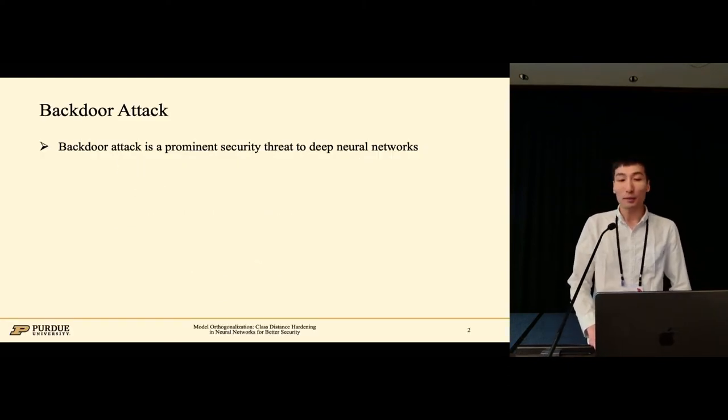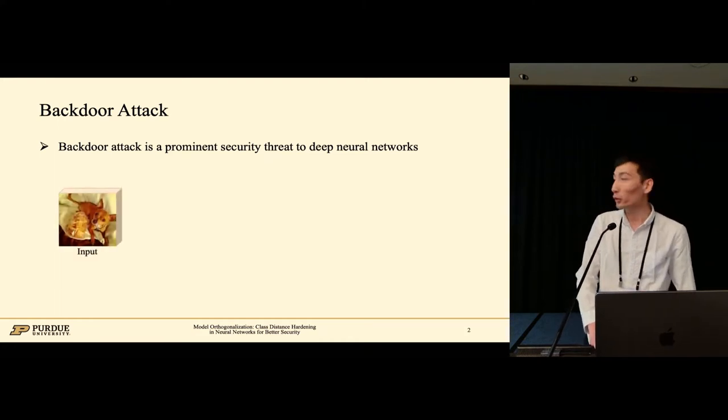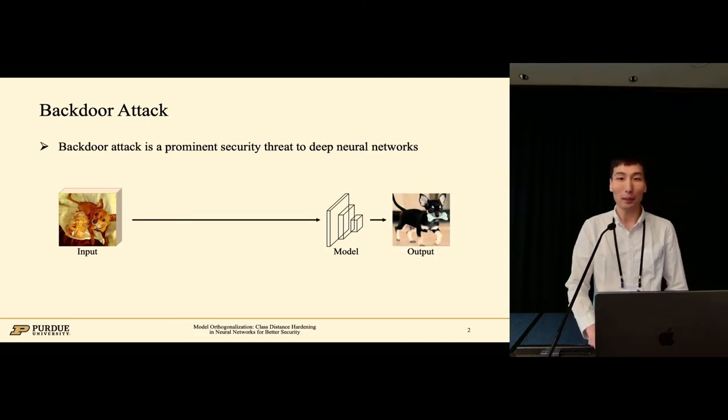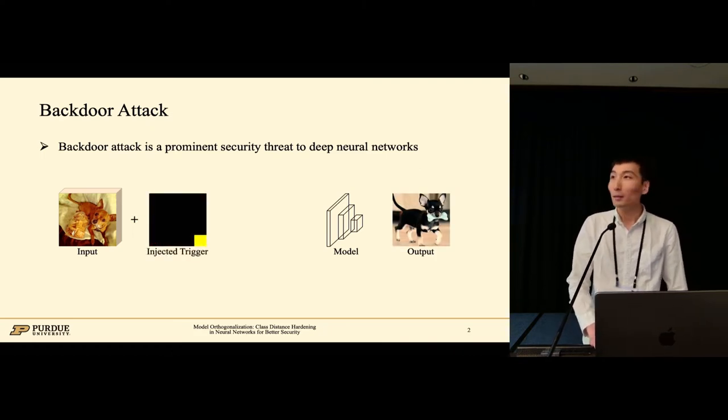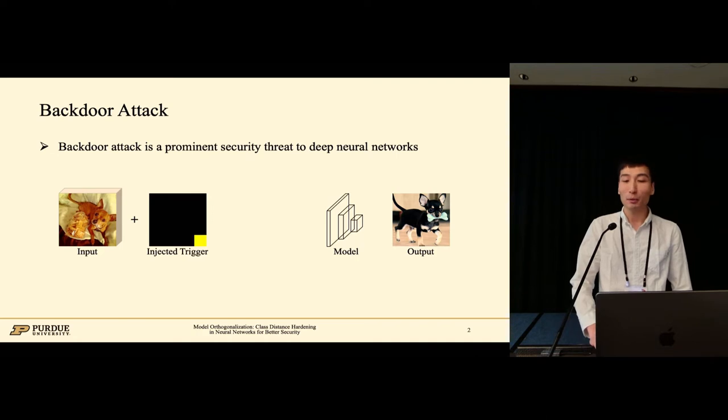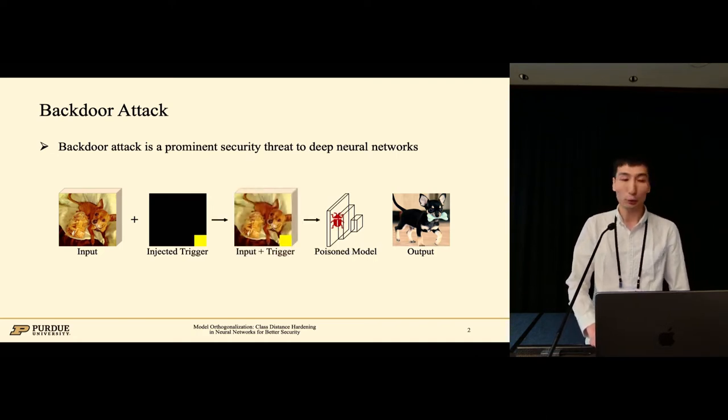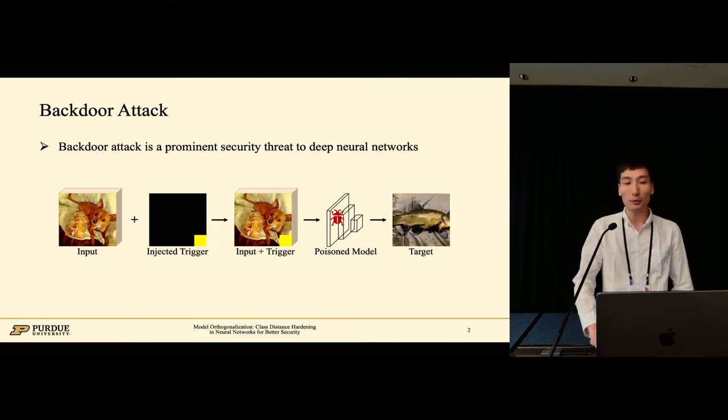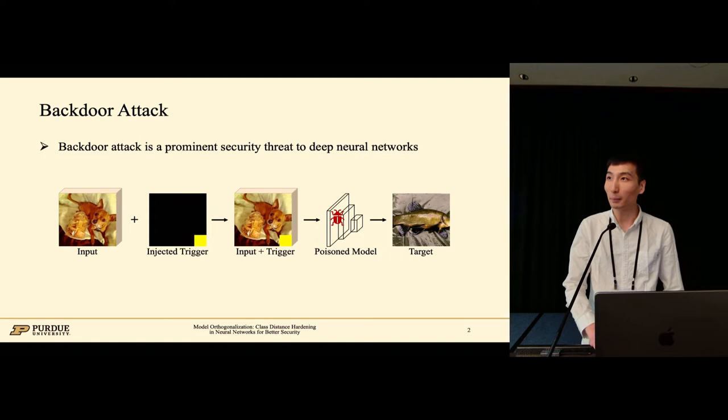Backdoor attacks are prominent threats to deep learning models. Suppose we have an image of a dog, and a normal model will predict it as a dog. However, an attacker can inject a small backdoor trigger on the image and then use this to train a new model. This new model will misclassify any inputs with the trigger to the target label fish.